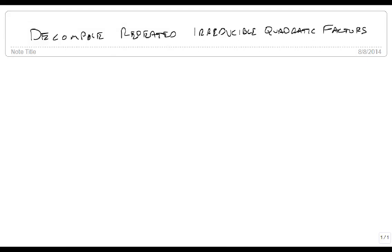We are now going to decompose repeated irreducible quadratic factors. And the big thing that we want to keep track of here is the fact that we need multiple unknowns.